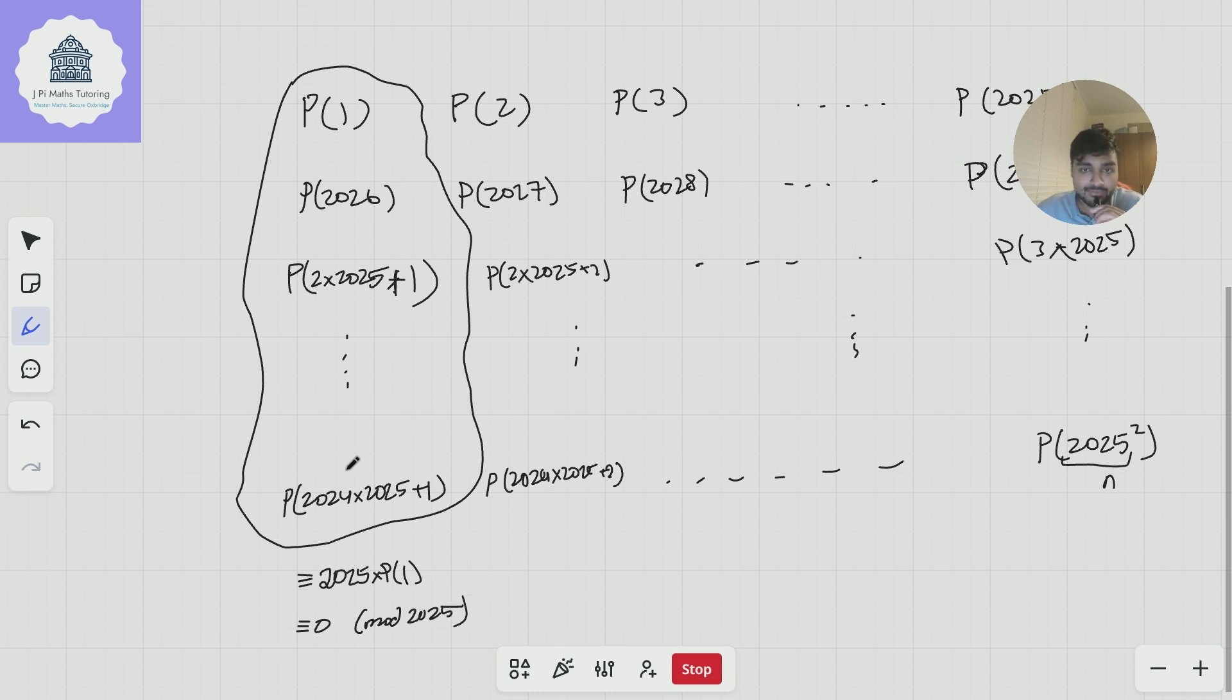So just to go over that, this first column here, there's 2025 numbers in that column. And I've started from 1, then added 2025 to get 2026. I've added 2025 again to get this number, and kept going like that. So I've got a column here with 2025 numbers in, and all of them are congruent to p of 1 mod 2025, hence I get this. But that, of course, is 0 mod 2025.